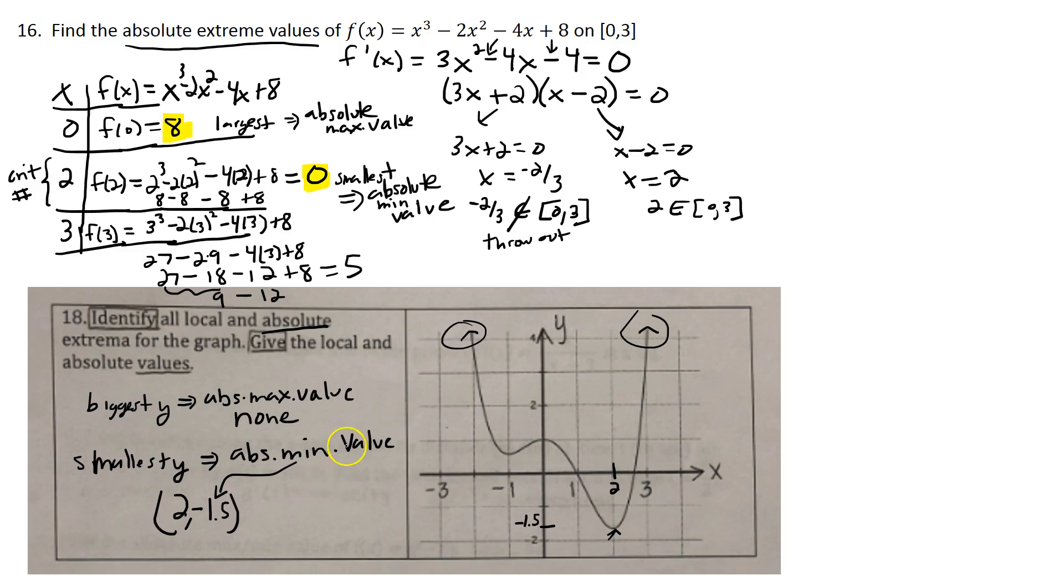Identify all local and absolute extreme values. So those are the absolute. Also, they were asking us about local. Locals can occur at the end point, there's no real end points anyway. And so we're going to have a local min. The local mins are going to be both at the point that we had 2, negative 1.5. That's a local min. You could be local and absolute at the same time. And then the other local min is going to occur when x is negative 1, a little more than a half, let's call it 0.6. Those are local min values, the points where they happen at, and these y values are local min values.